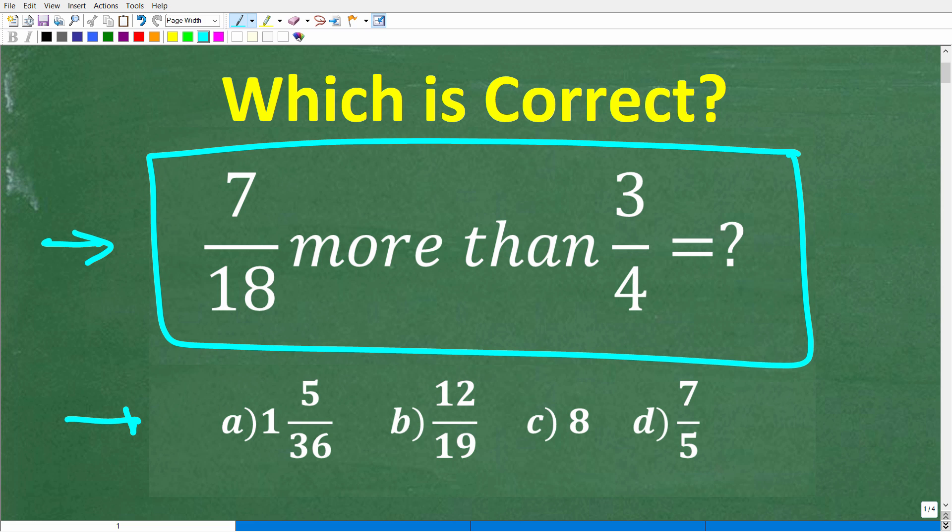Well, we have a multiple choice question here, and let's take a look at our answers. So the first choice, A, is a mixed number fraction - one and five over 36. B is 12/19, C is eight, and D is seven over five.